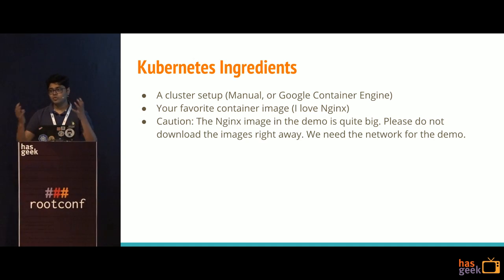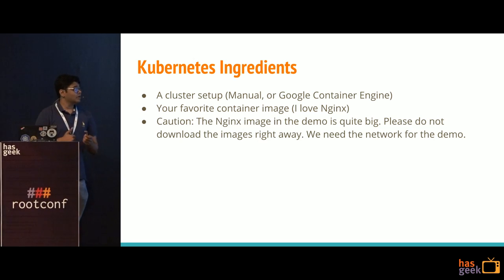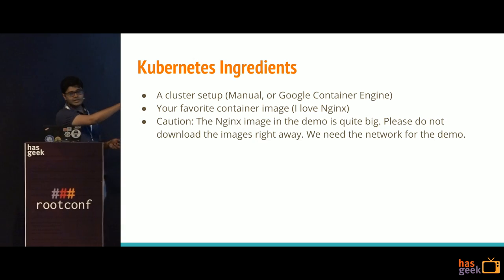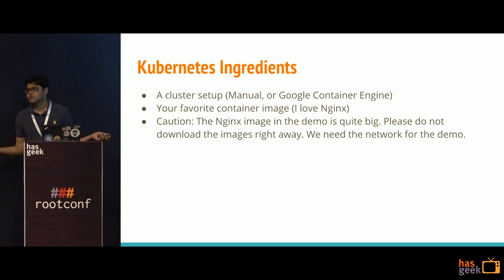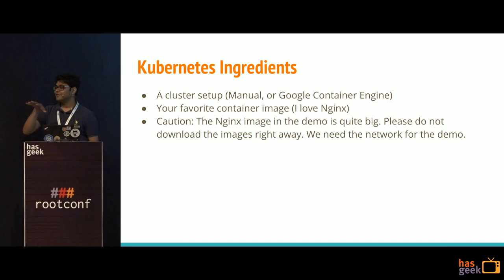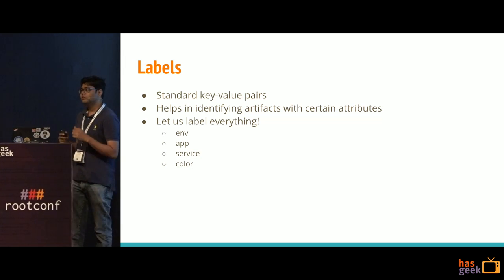Before we go ahead, we need some initial setup. I'll need a Kubernetes cluster and an image to demonstrate with. I'm going to use the Nginx image because that's a very common thing to use. I request you not to follow the demo right now because that will screw the internet and my demo won't work. So please don't try to download the Nginx image right away. With that, I'd like to introduce you to labels. How many of you here are familiar with Kubernetes?